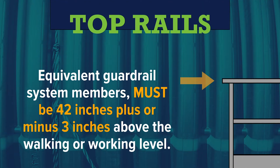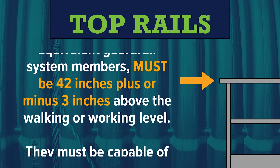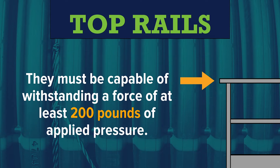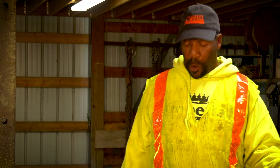Top rails, or equivalent guardrail system members, must be 42 inches plus or minus three inches above the walking or working level, and must be capable of withstanding a force of at least 200 pounds of applied pressure. If wire rope is used for top rails, it must be flagged at not more than six-foot intervals with high visibility material. The top rail can be made of two-by-four lumber, manila rope, or synthetic rope, but it must be strong enough to withstand the weight of an individual working on the scaffold.